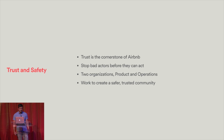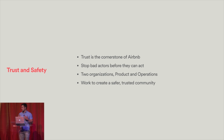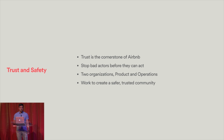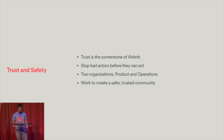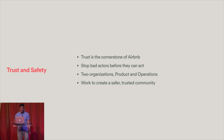So what is trust and safety? At Airbnb, we believe that trust is the cornerstone of our platform — that if you don't trust our platform, you're not going to be willing to trust that you're going to be able to stay in someone's place and nothing's going to go wrong. If there are bad people who are constantly taking advantage of the system, then you're not going to trust it. So our job is to stop bad actors before they're able to affect us or our community. We're comprised of two organizations, a product organization and an operations organization, and we work together to create a safer, more trusted community.